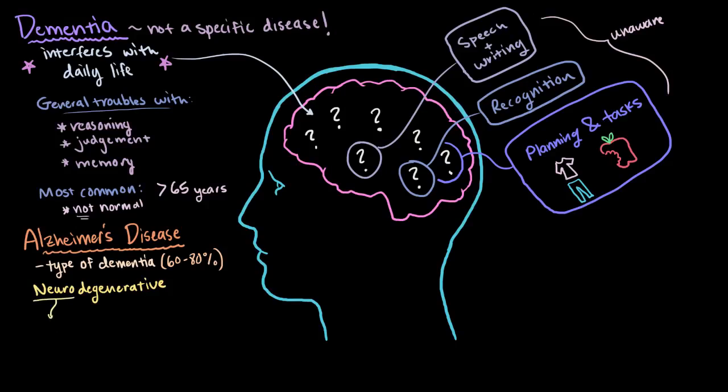So if we look at neuro, we know that this refers to the nerves of the nervous system, or basically your brain. And then degenerative, or degeneration, means to decline, or to deteriorate. So with Alzheimer's disease, there's this deterioration of your nerve cells in your brain.